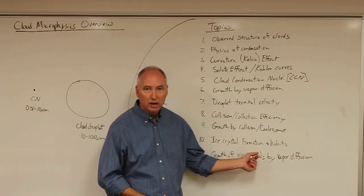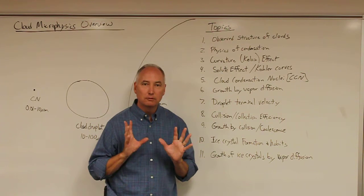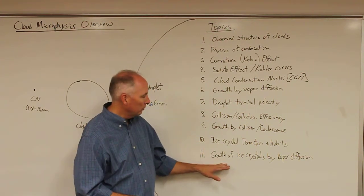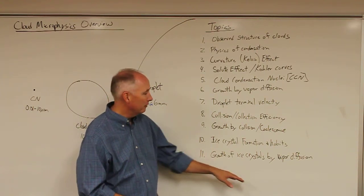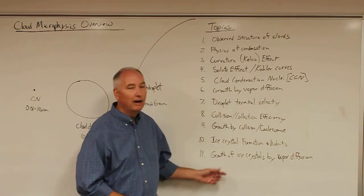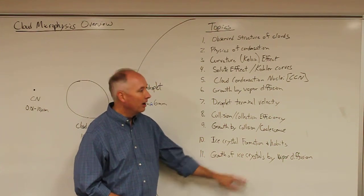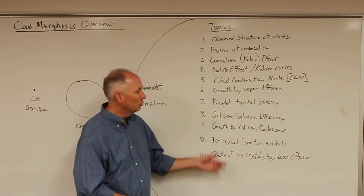We'll talk a little bit about the ice crystal formation process and the different types of habits, which are the different types of ice crystals that can form in the atmosphere. Then we will introduce a simplified version of the vapor diffusion equation that has been simplified for very regularized ice crystals.